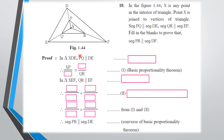In triangle XDE, PQ is parallel to DE — reason: given. Therefore by the basic proportionality theorem, XP upon PD equals XQ upon QE. This means PQ divides XD and XE in the same proportion.